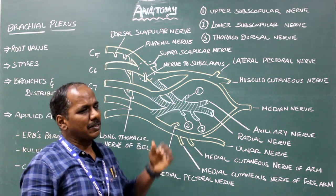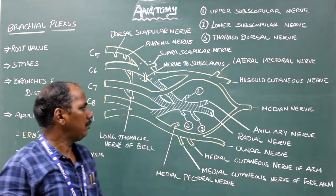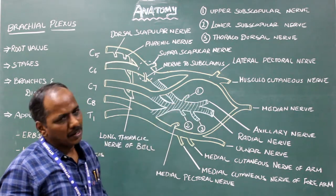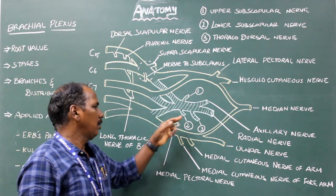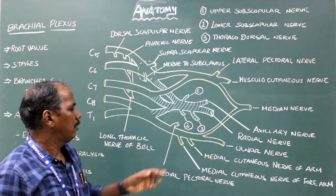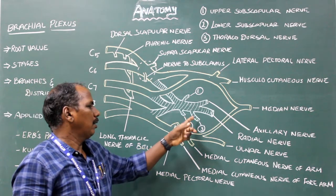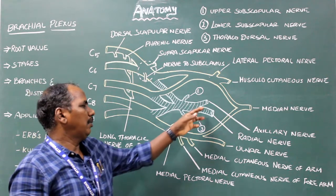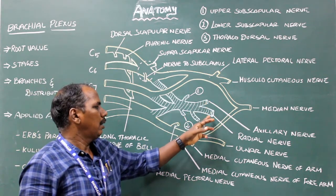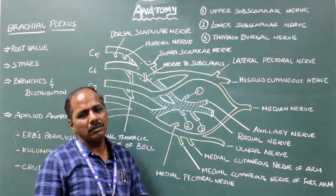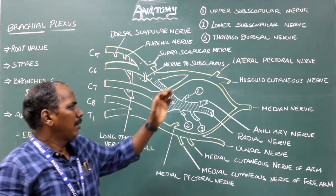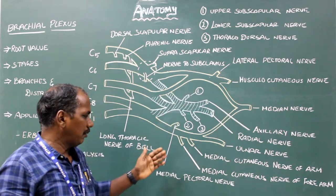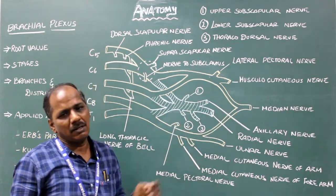Branches from the posterior cord: number 1, upper subscapular nerve; number 2, lower subscapular nerve; number 3, thoracodorsal nerve; number 4, axillary nerve; number 5, radial nerve. So there are three branches from the lateral cord and five branches each from the medial and posterior cord.